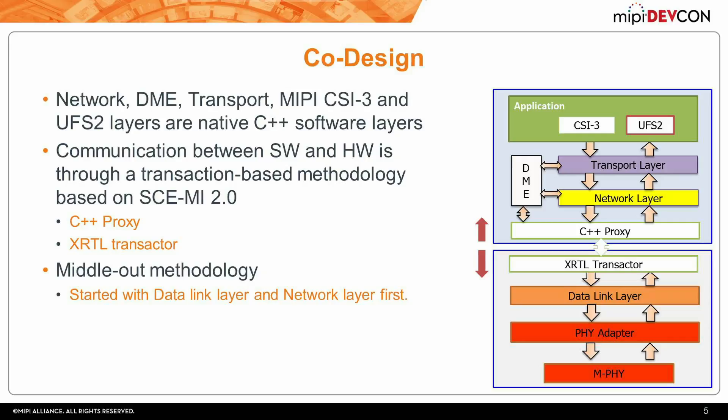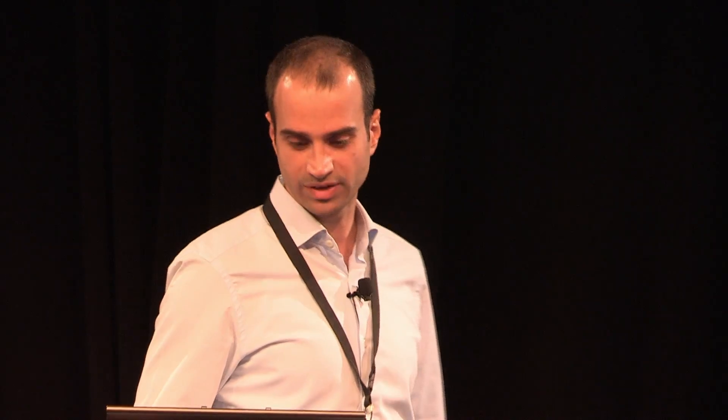In our implementation, we started with implementing the network layer and the data link layer with the connection between them as a proof of concept. If this worked well, we could build on that. After that, we continued with implementing the transport layer and then the file adapter layer. We called this a middle-out methodology, where we started from the middle, then the software team continued in the software layers and the hardware team continued in the hardware layers.